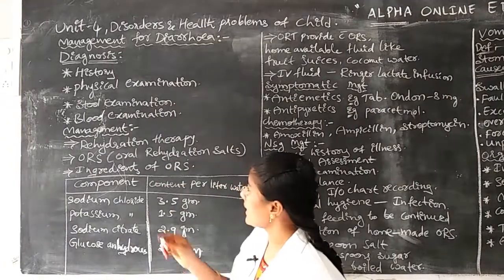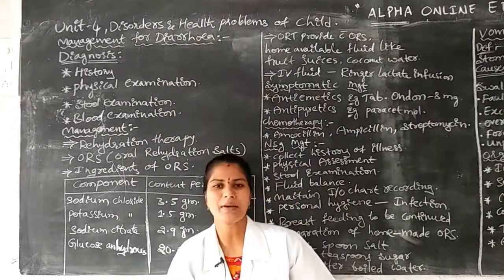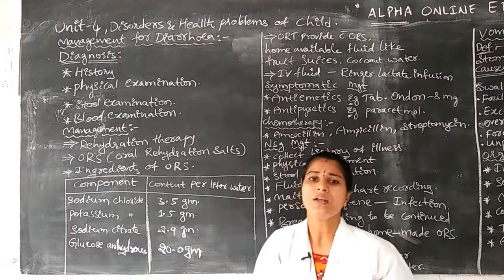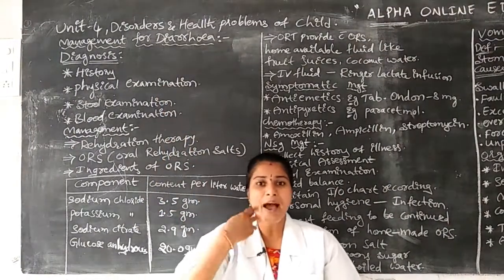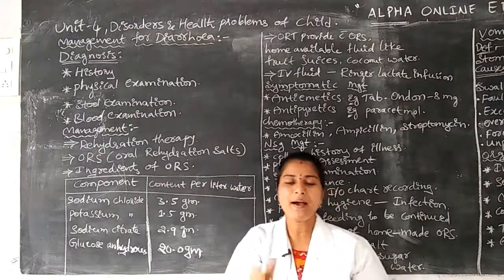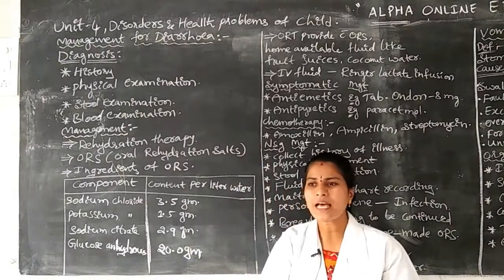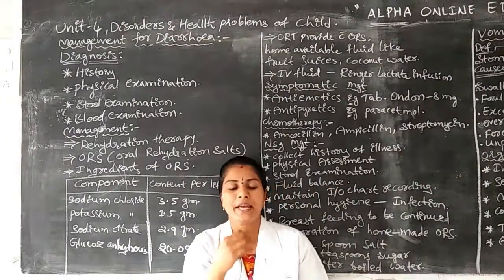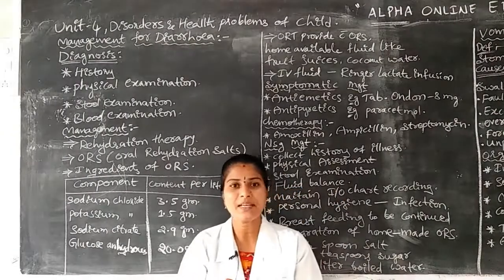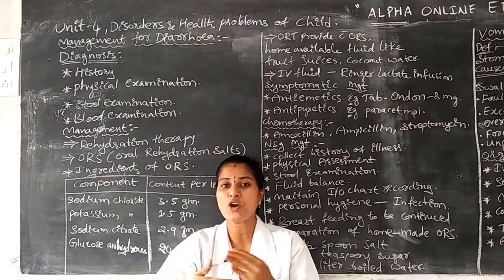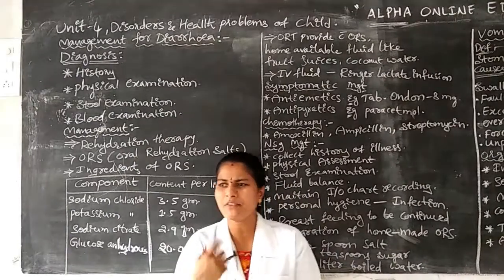The next step is physical examination. This includes inspection, palpation, percussion, and auscultation — four steps. In inspection, we assess the infant by using our eyes and observation. For example, if the infant is having excessive excretion of urine or motion many times, that can be observed visually.